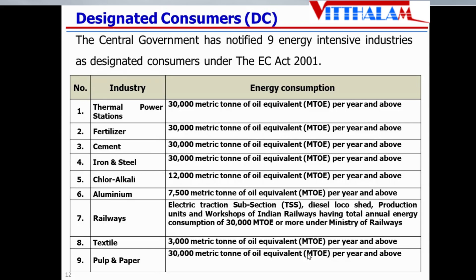For iron and steel, the cutoff is 30,000 MTOE; for chlor-alkali, 12,000; for aluminum, 7,500; for textile, 3,000; and for pulp and paper, 30,000. You can find some numerical questions on this — suppose there is a thermal power station which consumes various types of energy, you have to compute the metric ton of oil equivalent and check whether it comes under the EC Act as a designated consumer or not.